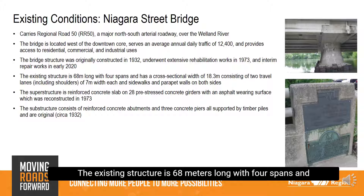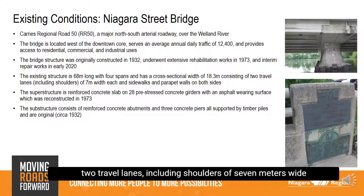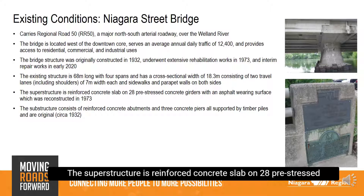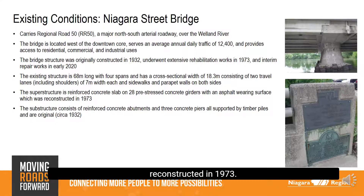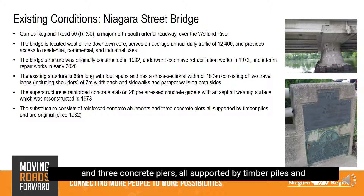The existing structure is 68 meters long with four spans, and has a cross-sectional width of 18.3 meters, consisting of two travel lanes including shoulders of seven meters wide each, and sidewalks and parapet walls on both sides. The superstructure is reinforced concrete slab on 28 pre-stressed concrete girders with an asphalt wearing surface, reconstructed in 1973. The substructure consists of reinforced concrete abutments and three concrete piers, all supported by timber piles, and are original through the 1932 construction.